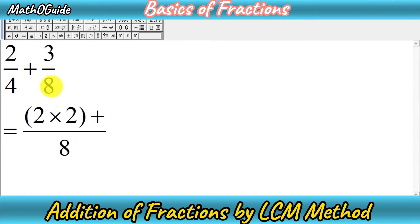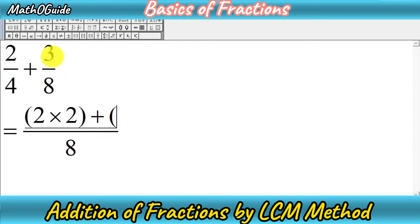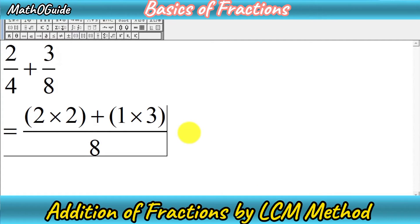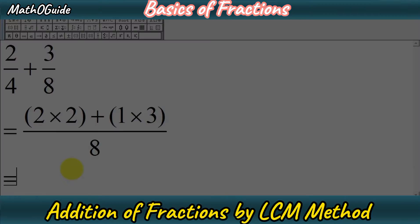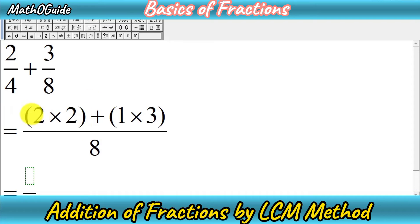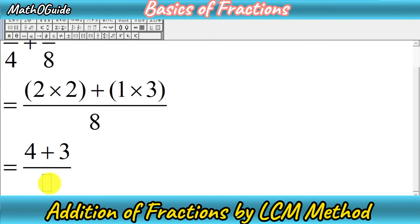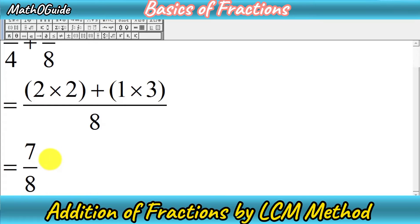Similarly, divide 8 by the denominator of the second fraction — we get 1. Multiply 1 by the numerator of the second fraction, which is 3. So we have 2 times 2 is 4, plus 1 times 3 is 3, giving us 4 plus 3 over 8.